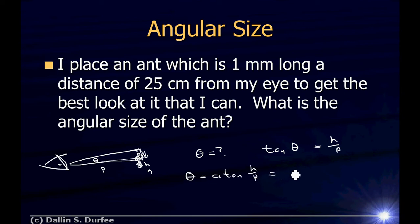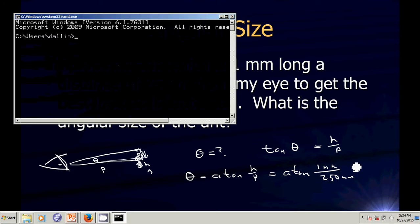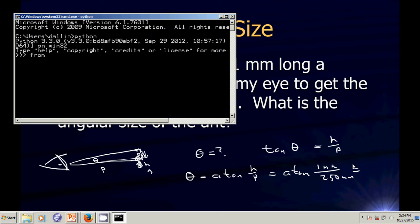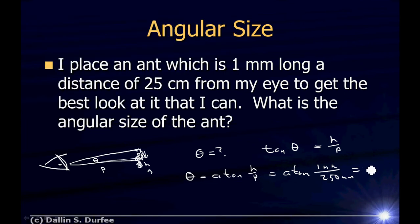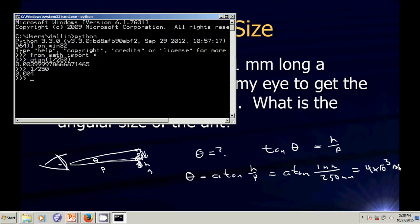So that's the arctangent of 1 millimeter divided by 25 centimeters, which is 250 millimeters. Pulling up Python, the arctangent of 1 divided by 250 gives 0.00399 — about 4 times 10 to the minus 3 radians. Notice if I just take 1 divided by 250, it's almost the same thing.